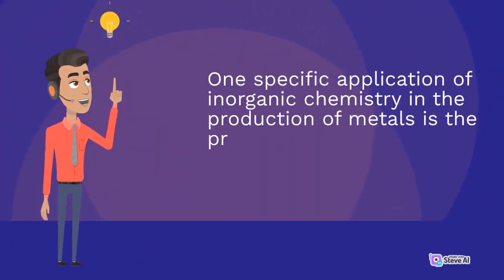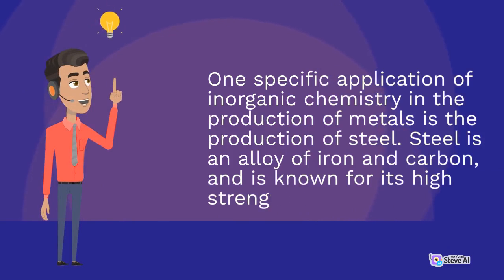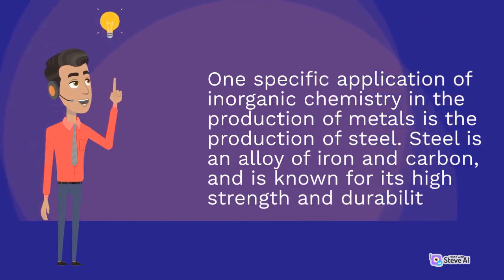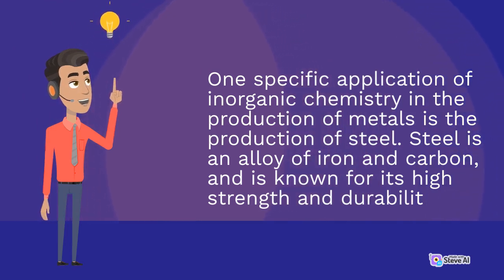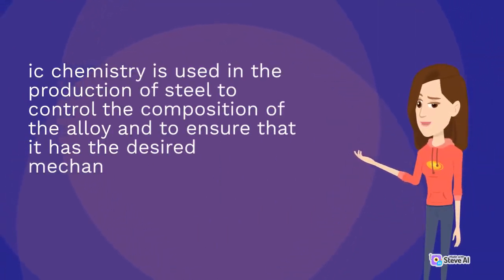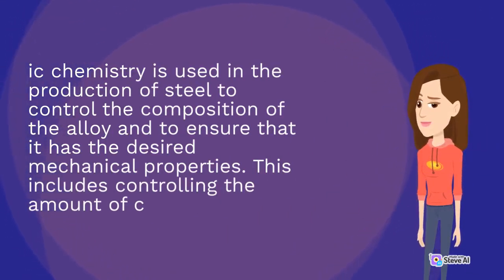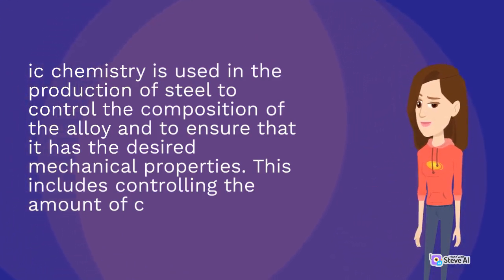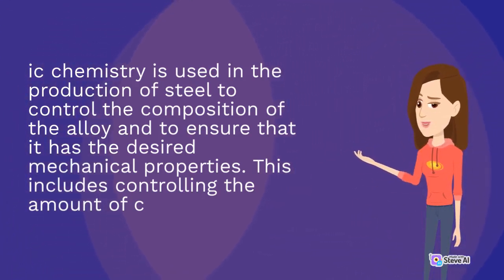One specific application of inorganic chemistry in the production of metals is the production of steel. Steel is an alloy of iron and carbon, and is known for its high strength and durability. Inorganic chemistry is used in the production of steel to control the composition of the alloy and to ensure that it has the desired mechanical properties.